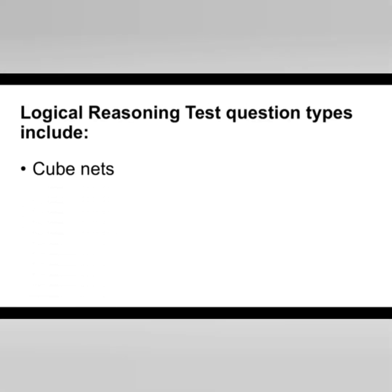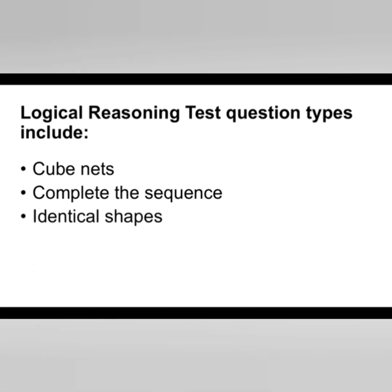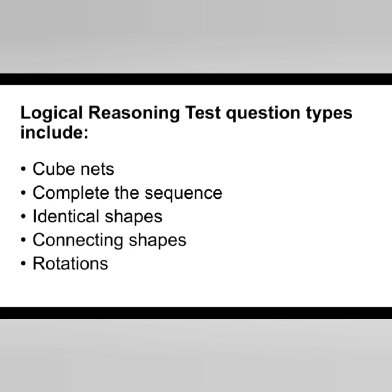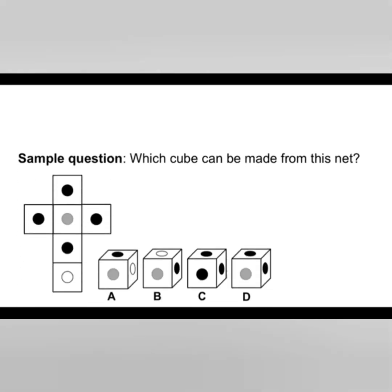Logical reasoning tests cover different kinds of cube nets, and we will look at that kind of question in a second. They also include completing sequences of shapes, looking for identical shapes within sequences, connecting shapes together, and looking for rotations of shapes. So there's quite a broad spectrum of different questions that you will encounter. Let's start looking at some different types of logical reasoning tests.